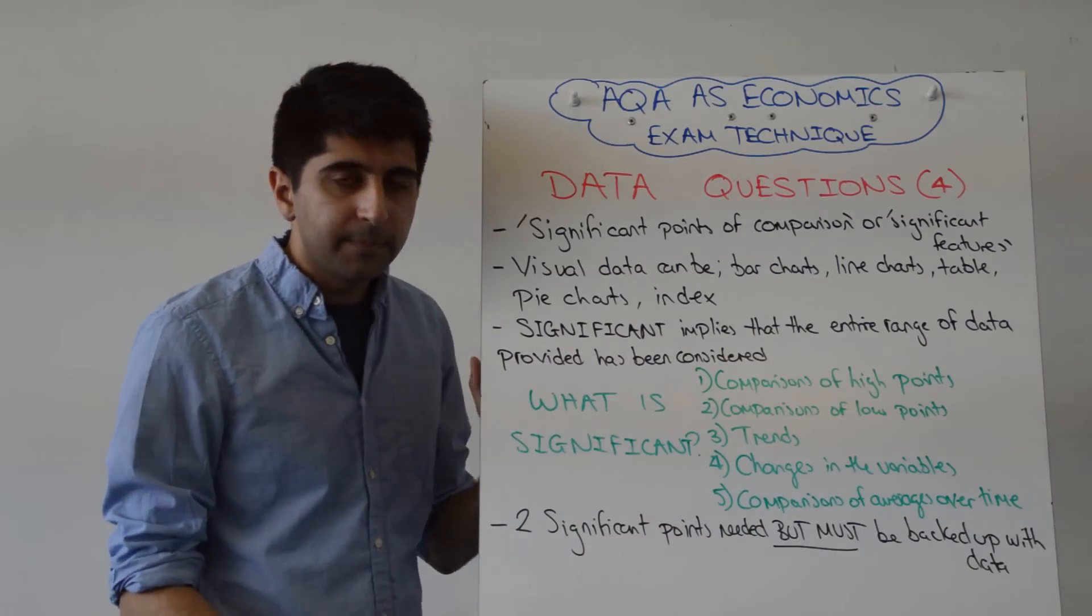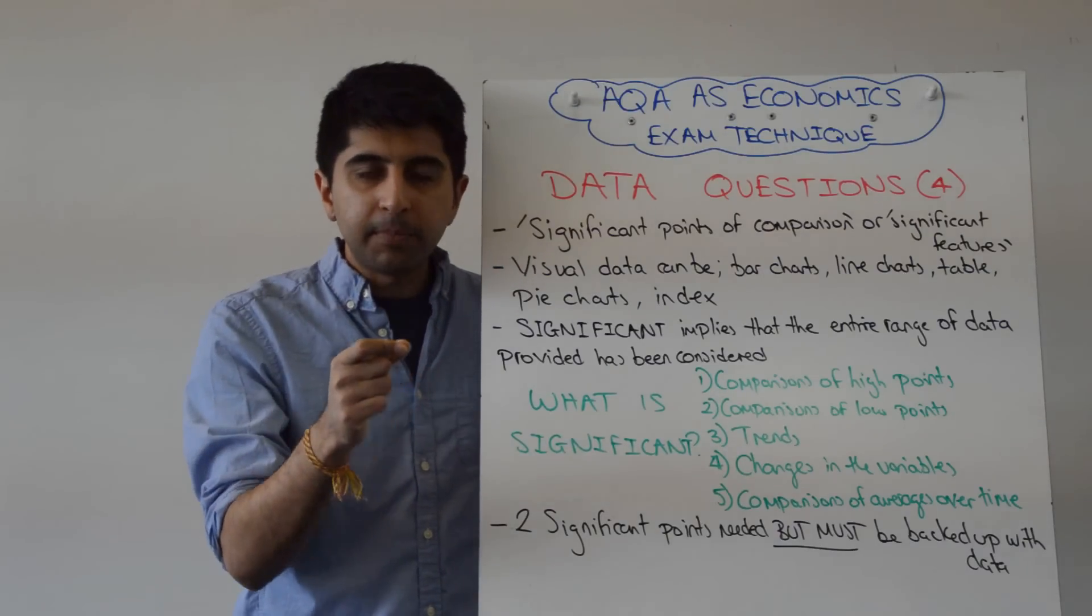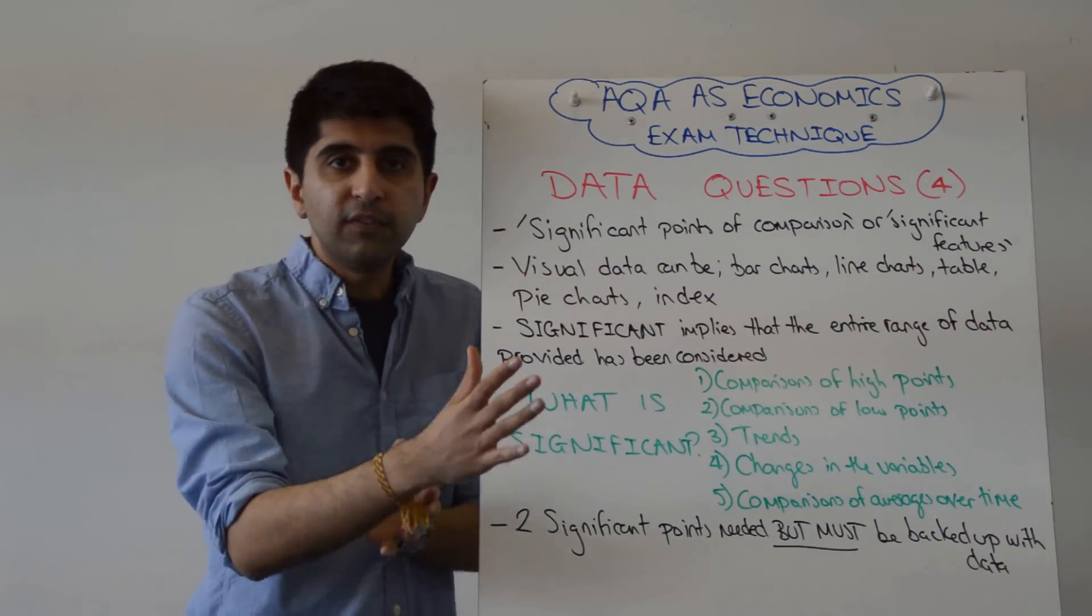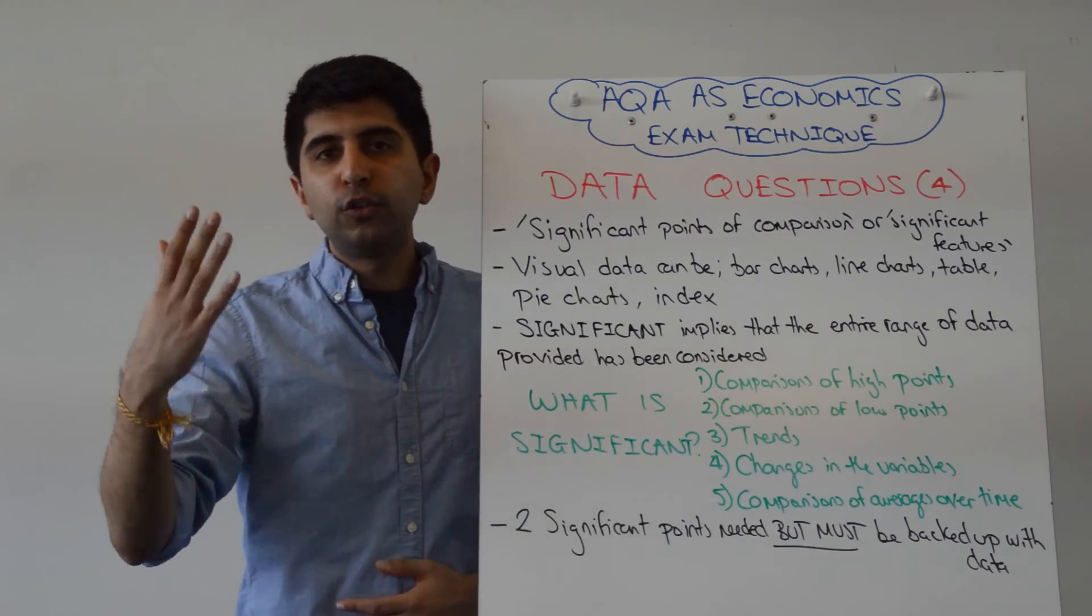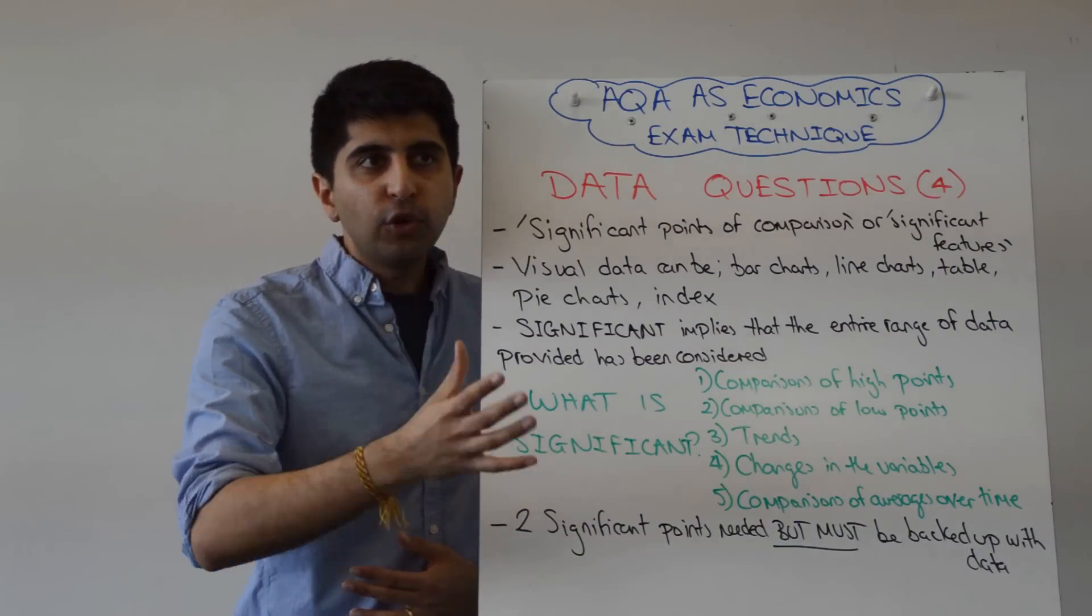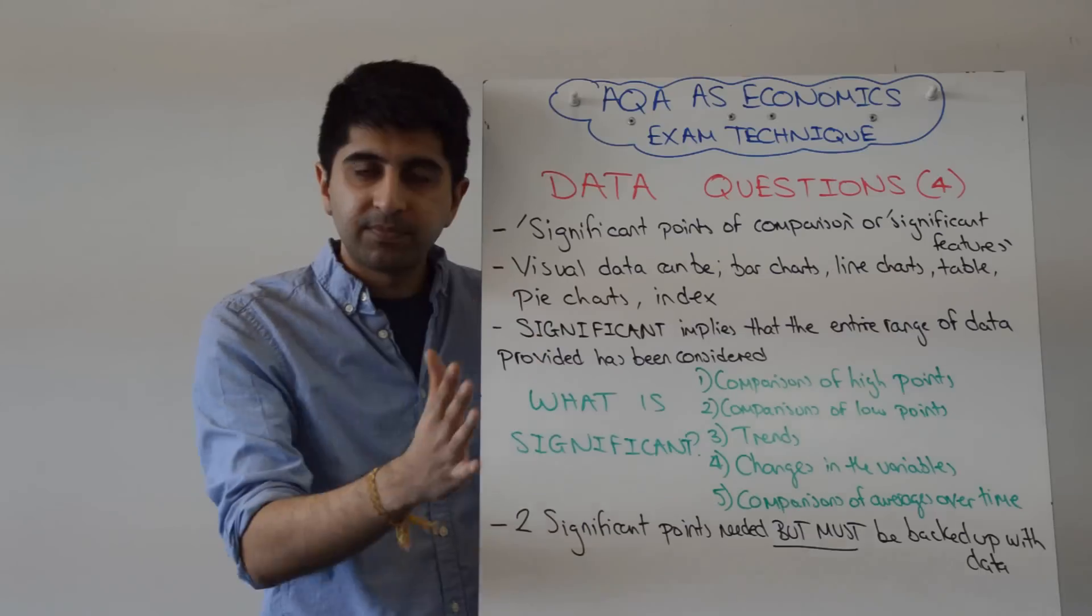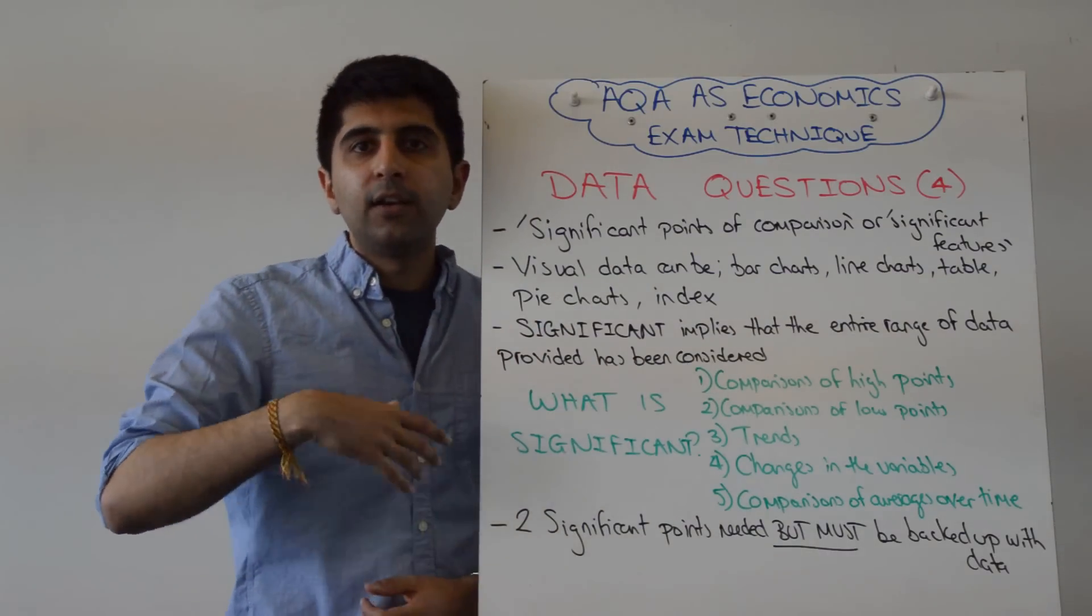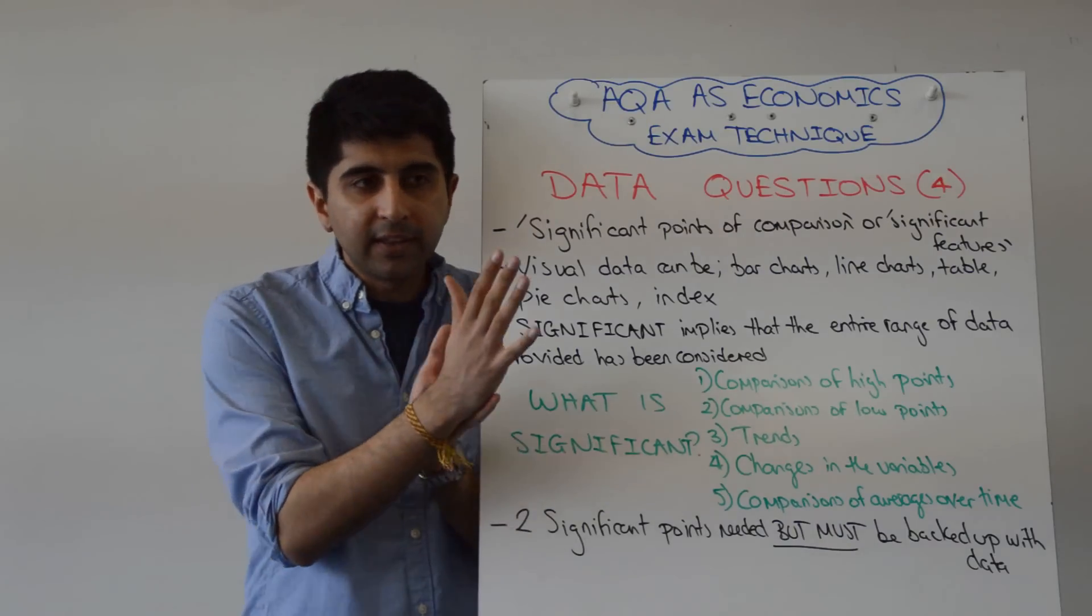Now, this is important. The word significant. The examiners use it because in their mind, significance implies that the student will have looked at the entire range of data. So the data is from 2000 to 2016. Then for your point to be significant, it needs to be clear that you've looked at the range of data. That's important. You've looked at everything. The point you make will then make that very clear. That's significant. Looking at the entire range.